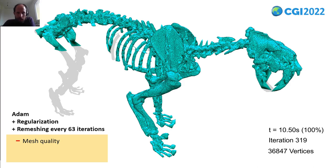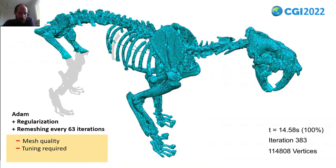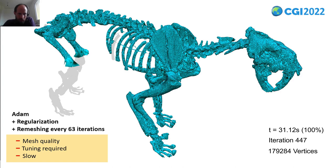So we still have not a perfect mesh quality. The bigger problem is that the hind legs are still not reconstructed. This is because we decrease the triangle size too fast, so we would need to tune the parameters for this specific object. The third disadvantage is that the remeshing of large triangle meshes with standard methods is just too slow—it takes many seconds.